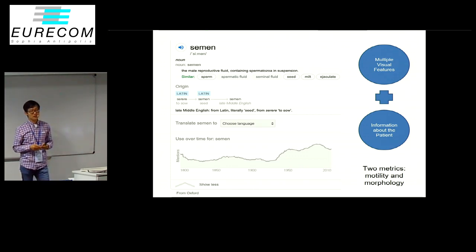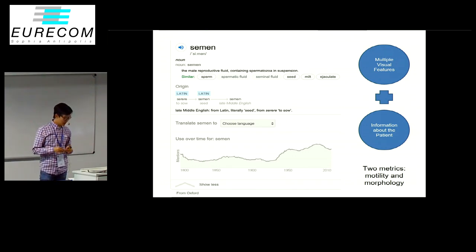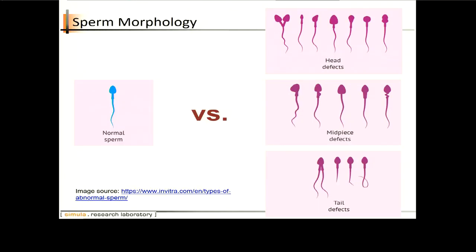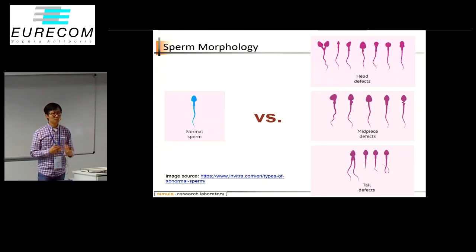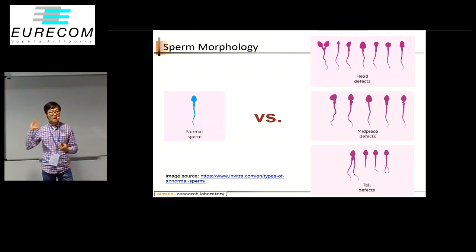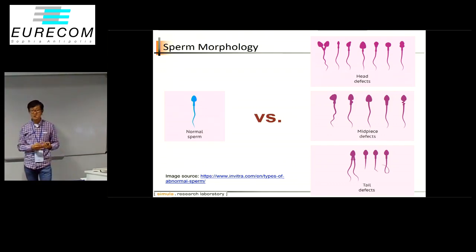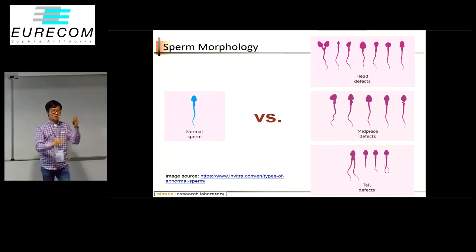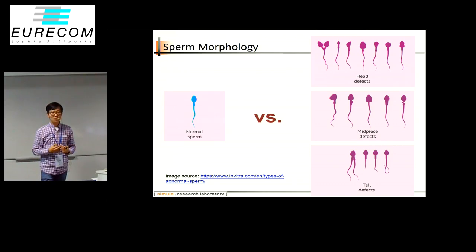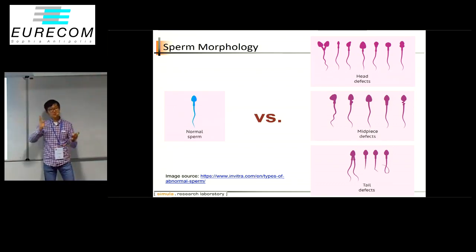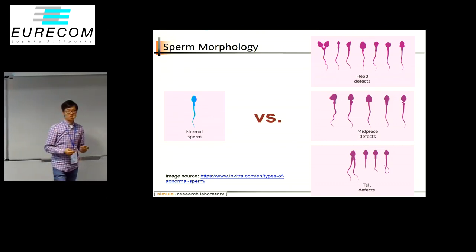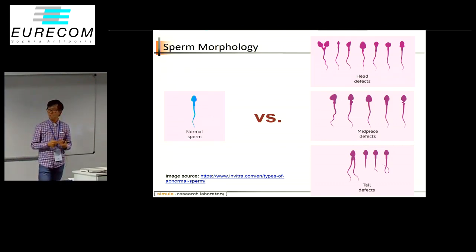This year we tried to make progress on two main metrics: the first is motility, and the second is morphology. For morphology, on the left-hand side you see the normal sperm, and on the right-hand side, three main cases of abnormal sperm — problems with the head such as two heads or an improper head, problems in the middle where the neck is not straight, and cases with two tails.